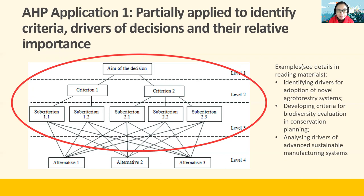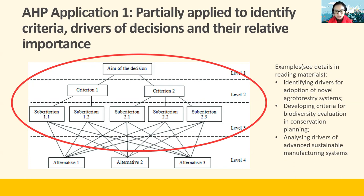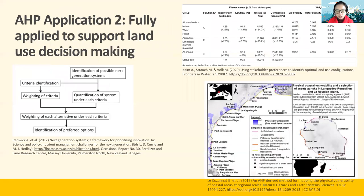Different stakeholders or land managers may consider different criteria and sub-criteria and will have different preferences and priorities. If you're interested in understanding those differences and how trade-offs among different criteria are managed, you can use the first stage of AHP as a framework to engage stakeholders and investigate those drivers of decisions. You can find examples in the reading materials on how AHP was used to identify criteria and drivers of decisions. We will also provide an example in this training module of using AHP to understand how different agriculture land managers manage trade-offs in their land use decision-making. More commonly, researchers have been using the whole process of AHP to support making a land use decision.